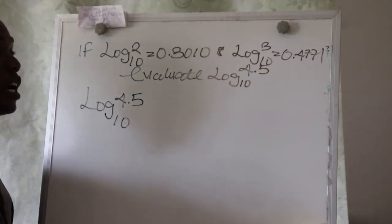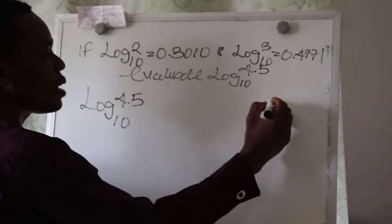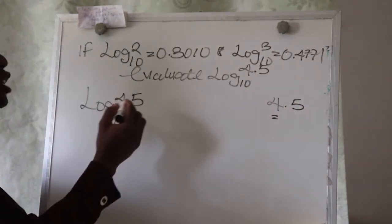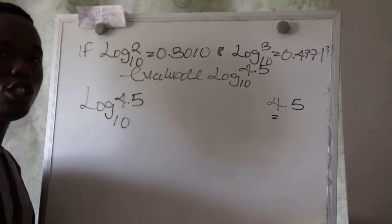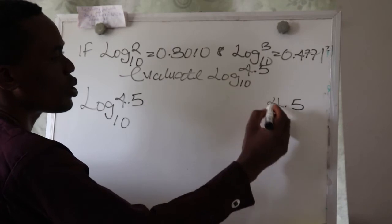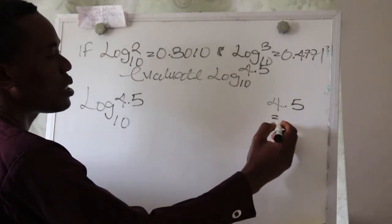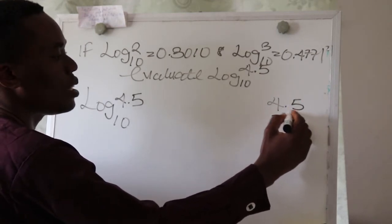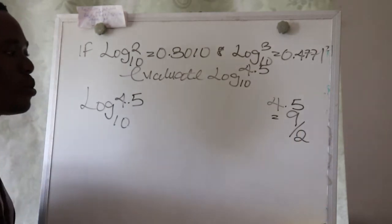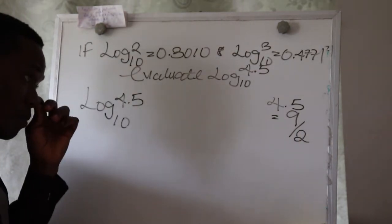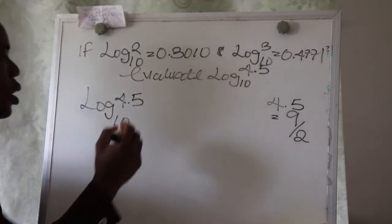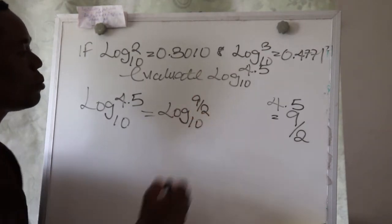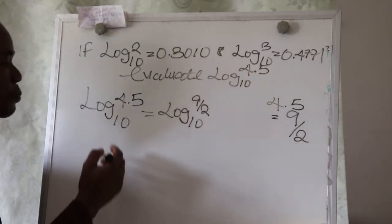We have 4.5 and we want to convert 4.5 into a fraction. Whenever you are given any question, make sure you convert the decimal number into a fraction. Two times 4 gives us 8, remainder 1, so that becomes 9, giving us 9 over 2. Nine divided by two gives you 4.5, so we'll have this equal to log of 9 over 2 base 10.